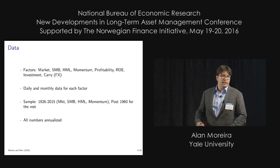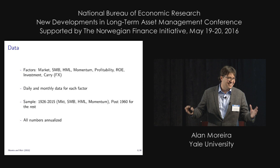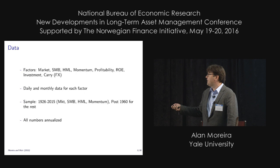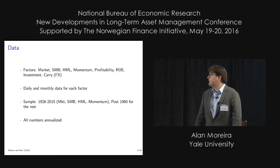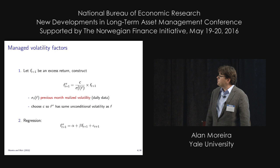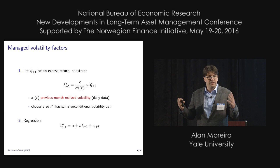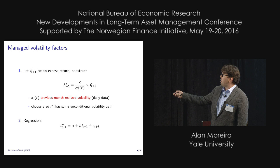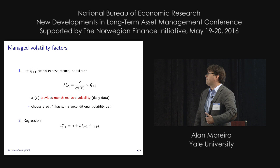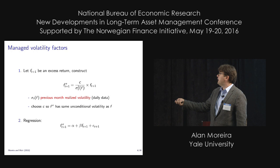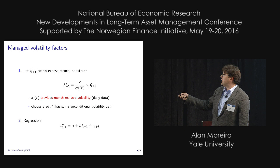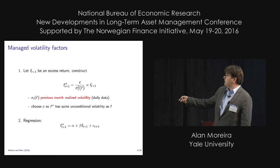The data — there's no data collection effort involved in this exercise. It's the most standard data you can imagine and you can download or ask for from anybody. The key constraint is that we need daily data to construct our measures of volatility, and all the numbers reported are annualized. We go get your favorite asset pricing factor — or even a combination of factors that you think spans the mean-variance frontier — and then construct a measure of previous month realized volatility using past daily data. There's no parameter estimation involved.